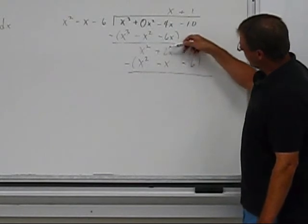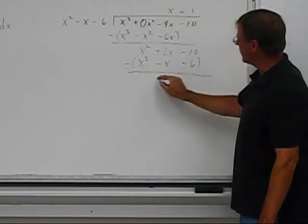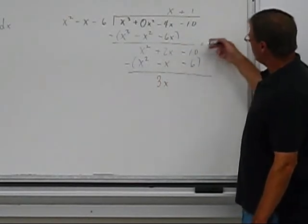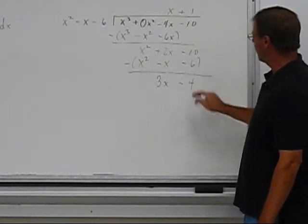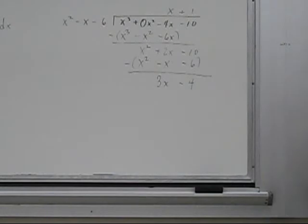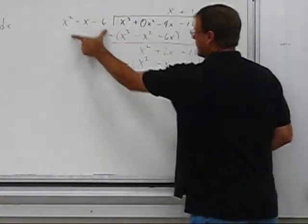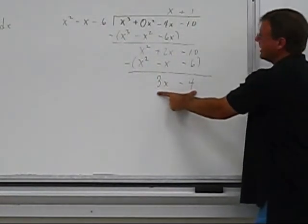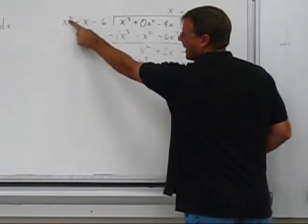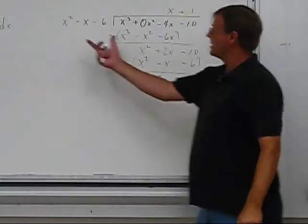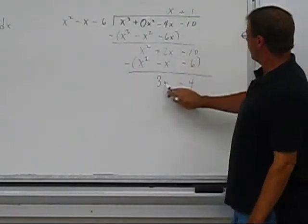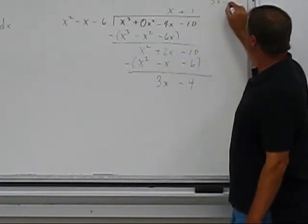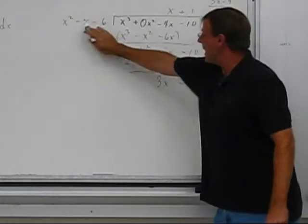0 here, 2x minus negative x gives me 3x, negative 10 minus a negative 6 gives me negative 4. So at this stage, we're going to try to divide this into this, but the power is now lower than the power here, so when we divide into this term here, what we write is this term divided by that term.